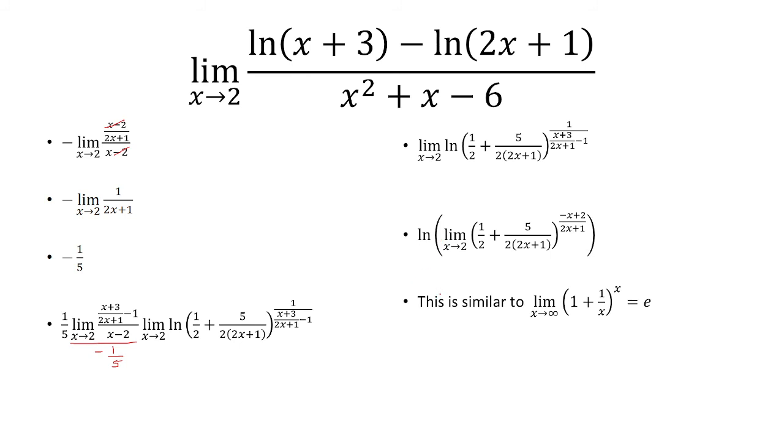And unfortunately here, I didn't show the work, but basically this is similar to the limit as x approaches infinity of 1 plus 1 over x to the x power. And here's a typo, this should be 1 over x plus 3 over 2x plus 1 minus 1. So it's the same exponent here, because basically it's just like 1 to infinity. It's very similar.